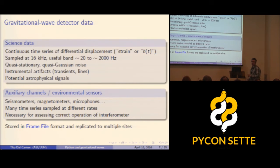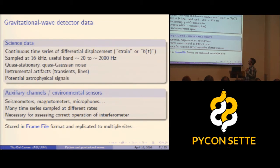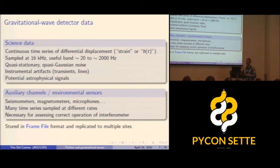How does the data from such an instrument look? The main scientific product is the science data — a discrete time series of differential displacement in the mirrors, called strain or H(t). In LIGO, this is sampled at about 16 kilohertz and stored as double precision numbers. The useful frequency band is between 20 Hz and 2 kHz.